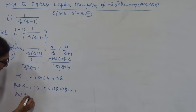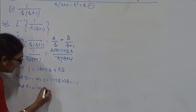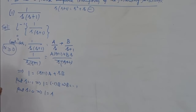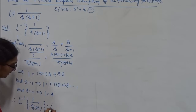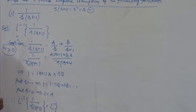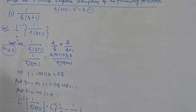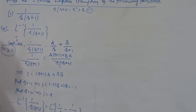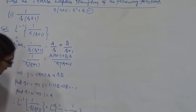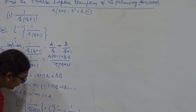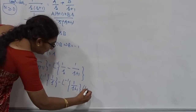Therefore, the inverse Laplace transform of 1 by S into S plus 1 is: L inverse of A by S plus L inverse of B by S plus 1 — that is, L inverse of 1 by S minus L inverse of 1 by S plus 1. From the linear property, this separates into two standard forms. We know L inverse of 1 by S is 1. Also, L inverse of 1 by S minus A is E power AT. Here S plus 1 is written as S minus of minus 1, so A equals minus 1. Therefore L inverse of 1 by S plus 1 is E power of minus T.